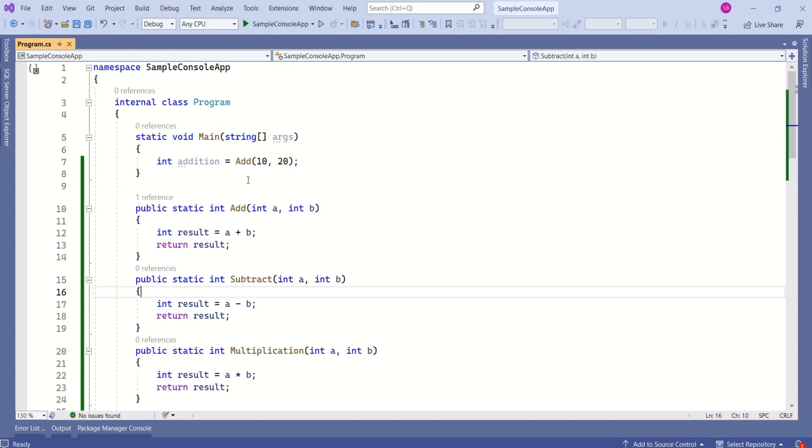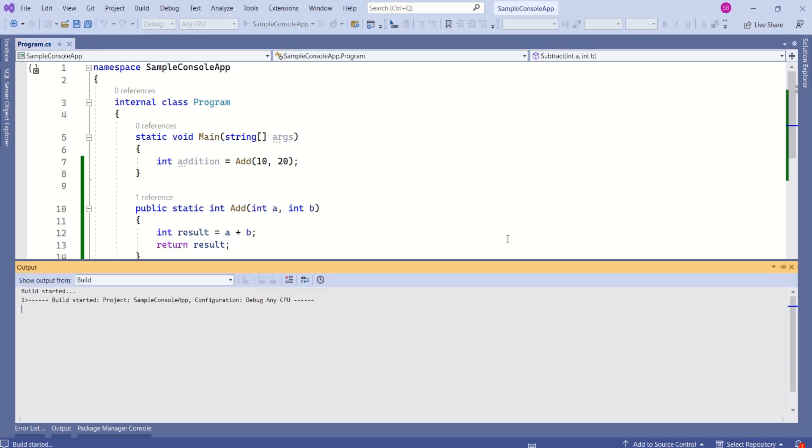We have written this application using C-sharp, and C-sharp is a high-level language. When we build this application, the C-sharp compiler converts this high-level language code to intermediate language code and stores it in a DLL.